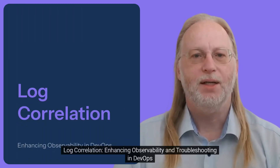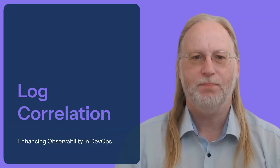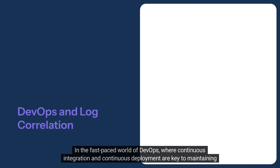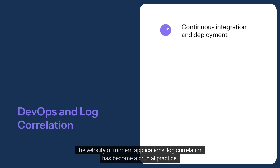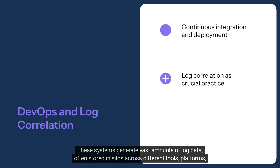Log correlation: enhancing observability and troubleshooting in DevOps. In the fast-paced world of DevOps, where continuous integration and continuous deployment are key to maintaining the velocity of modern applications, log correlation has become a crucial practice. As DevOps engineers, we face an ever-growing complexity of systems, microservices, and infrastructure components that generate vast amounts of log data, often stored in silos.